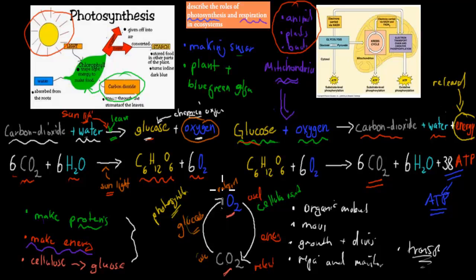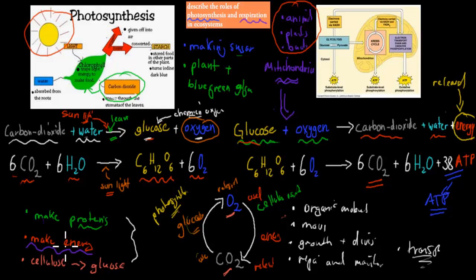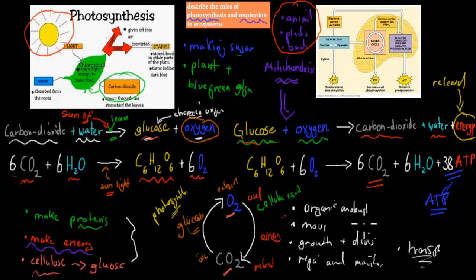Photosynthesis happens in plants only — plants and blue-green algae. Cellular respiration happens in all animals, and even plants have to carry out cellular respiration. But they're linked together. Photosynthesis makes energy in the form of glucose, and plants can also use that glucose to make cellulose for their cell wall structure. We use respiration to make energy, and we and other organisms need energy to make organic molecules, to move, to grow, to divide, to repair and maintain our cells, and to transport molecules.